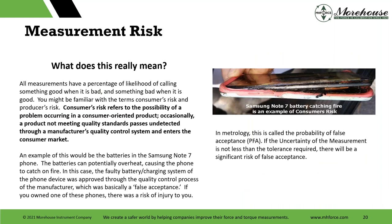Starting to talk about measurement risk a little bit — a lot of people might remember the Samsung Note 7, which was a big deal a while ago. If we look at this and start talking about measurement risk, that gets into conformity assessment, and then conformity assessment gets into all these fun words like PFA — probability of false accept — FAR — false accept risk — unconditional PFA, conditional PFA, and PFR — probability of false reject.